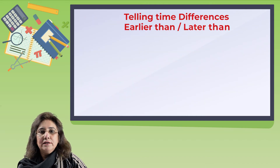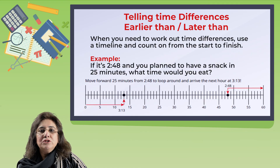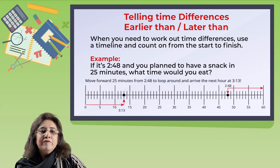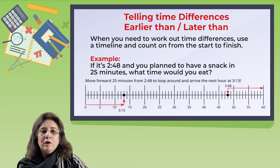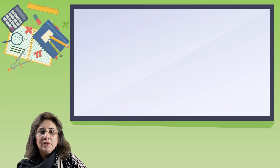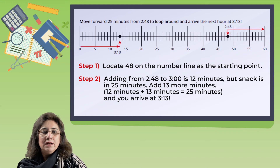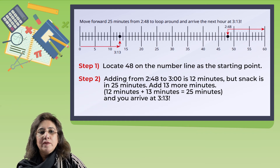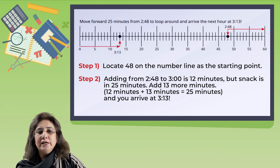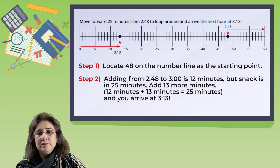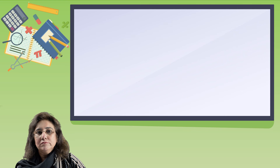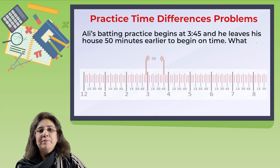Telling time differences — earlier than and later than. When you need to work out time differences, use a timeline and count on from the start to finish. For example, if it's 2:48 and you plan to have a snack in 25 minutes, what time would you eat? Step 1: locate 48 on the number line as the starting point. Step 2: adding from 2:48 to 3:00 is 12 minutes, but the snack is in 25 minutes, so add 13 more minutes and you arrive at 3:13.